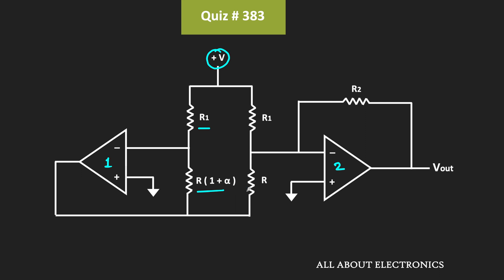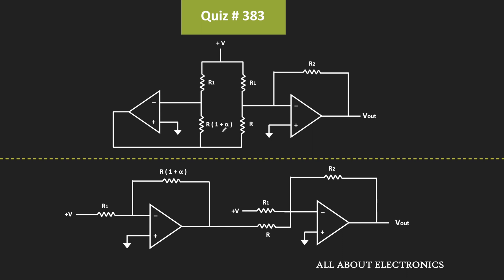The output is connected to one end of this resistor, and the second end of resistor R is connected to the inverting terminal of the second op-amp. Similarly, one end of resistor R1 is connected to the inverting terminal of the second op-amp and the second terminal is connected to plus V volts. If we just redraw the same circuit, this resistor is the feedback resistor between the inverting terminal and the output terminal. R1 is connected between plus V volts and the inverting terminal, and the output of the first op-amp is connected to this resistor R.